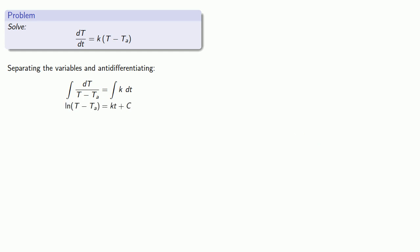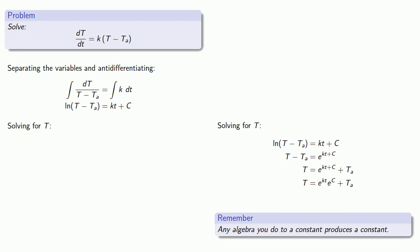Now we do actually want to solve for T, so when we solve for T, we get. And again, the important thing to remember is that any algebra you do to a constant produces a constant, which means that this e to the power of C is going to be another constant, which we can just call C. And so we get our final equation.